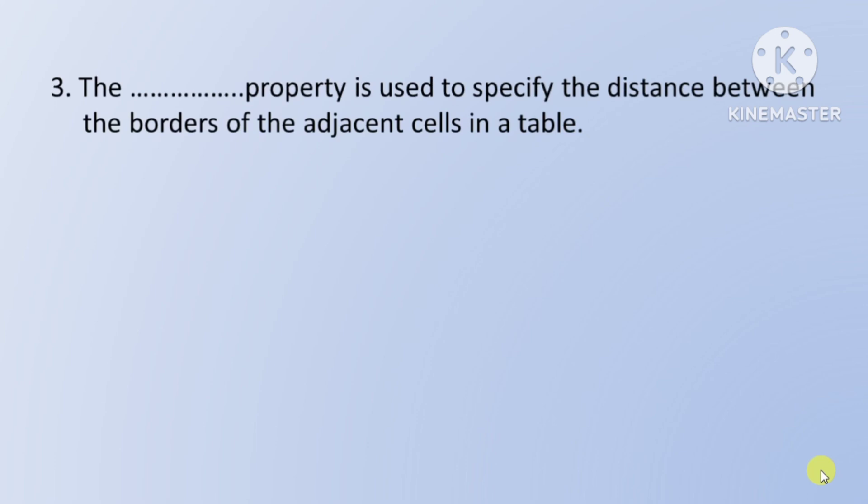Next question: the property used to specify the distance between the borders of the adjacent cells in a table — woh kaun si property hai jiska prayog kiya jata hai ek table ke adjacent cells ke borders ke beech mein distance ko specify karne ke liye. So this answer hai: border-spacing property.